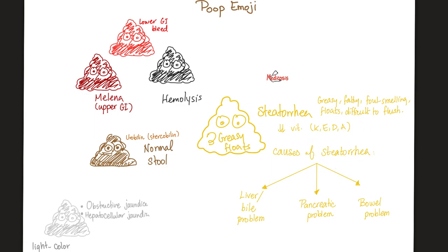Steatorrhea could be caused by a problem in your intestine, a problem in your pancreas, or a problem in your liver. Because in order for you to digest fat and grease, you need a good bowel, good pancreas, and a robust liver and biliary system. Any disease in any of these can lead to fatty stool — steatorrhea. And you're not just losing the fat, you're also losing fat-soluble vitamins such as vitamin K, vitamin E, vitamin D, and vitamin A.